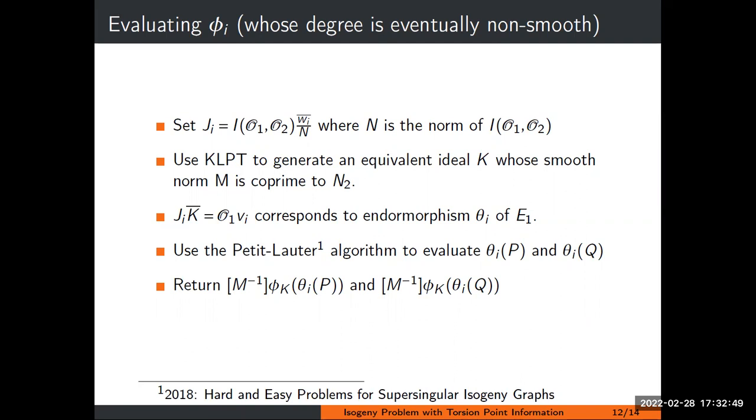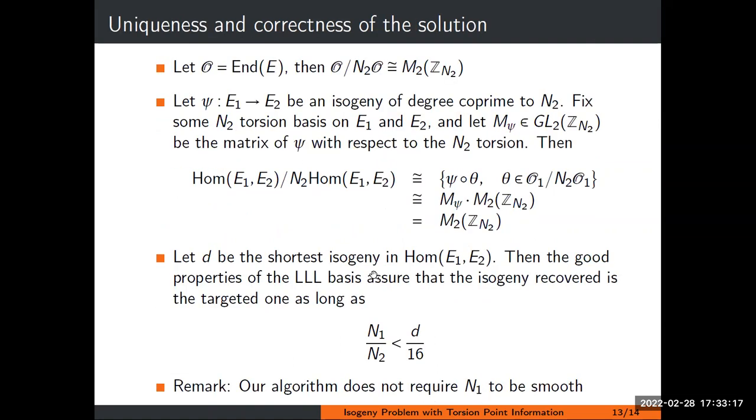You compute the product of Ji with the conjugate of K, which is just K corresponding to the dual of that isogeny, which will be a principal ideal since it's an endomorphism of the first curve. The main component is you can evaluate these θi, and you can evaluate φK as well because it has smooth norm. Then you have to multiply with the inverse of M because when you cut off, you added multiplication by M. That's why it's crucial that the norm of M is coprime to N2 for this to work.